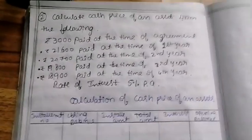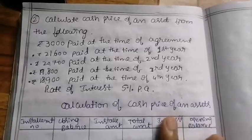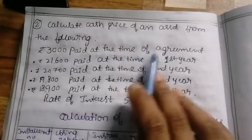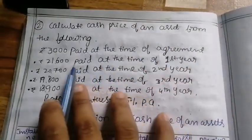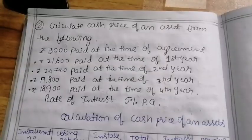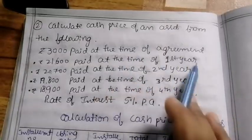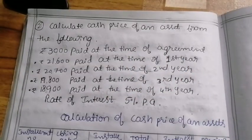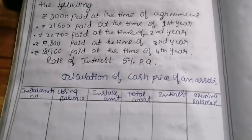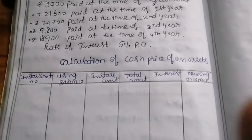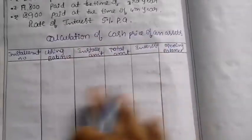Now let us see the second pattern, a 4-mark question: calculate the cash price of an asset from the following data. Given: time of agreement amount, first year amount, second year amount, third year amount, rate of interest — calculate the cash price. This is the cash price of an asset format.